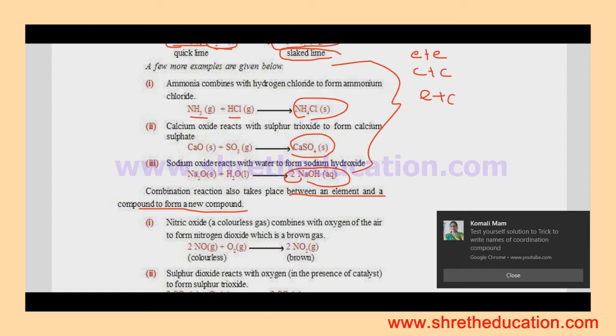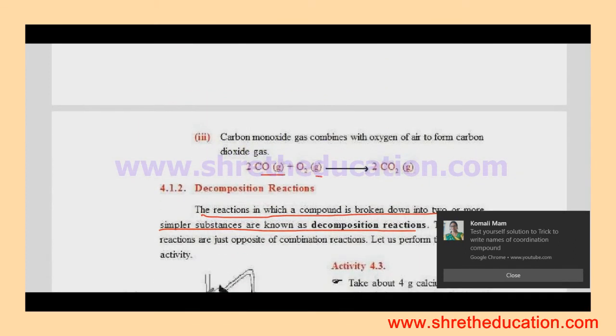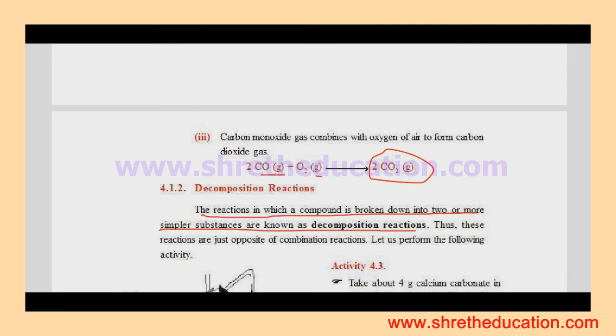Ammonia reacts with HCl to form ammonium chloride. Calcium sulfate formation and sodium hydroxide formation are examples. These are examples of compound-compound reactions at the combination reaction level. Now we'll look at reactions between elements and compounds.